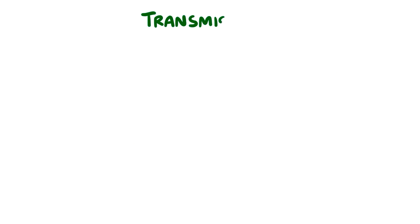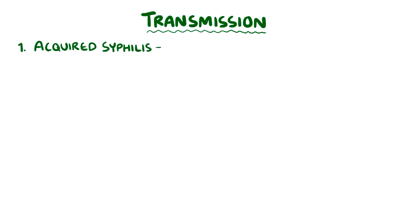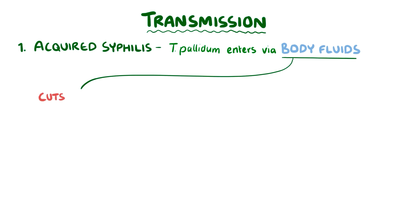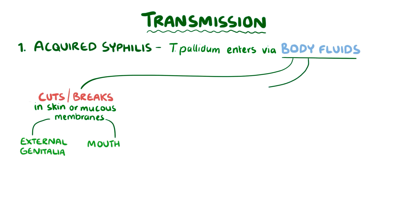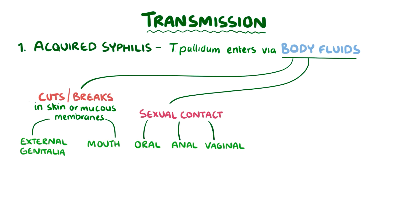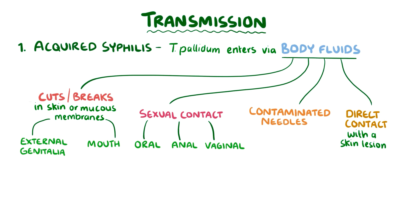People that have syphilis can transmit the disease to others in one of two ways. The first is called acquired syphilis, and that's when Treponema pallidum enters the body through bodily fluids. That can happen when there are tiny cuts or breaks in the skin or mucous membranes of the external genitalia or mouth and when there's sexual contact, including oral, anal, and vaginal sex. It can also happen when people share contaminated needles, or when they have direct contact with a skin lesion on an infected person, because the skin lesion is covered in fluid which is rich in spirochetes.